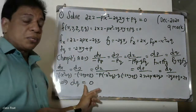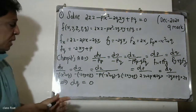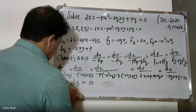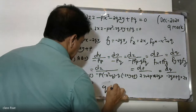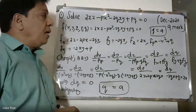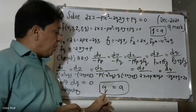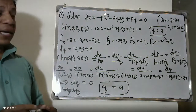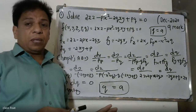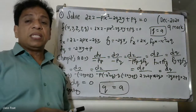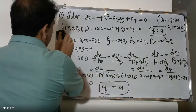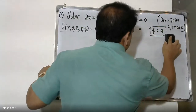Therefore dq equals zero, which means q equals a constant. Our first result is q equals zero — meaning dq equals zero. We reject further terms, so q is equal to a constant value a. Therefore q equals a. What is the value of p? If p and q are known, we can find the value of p and q.